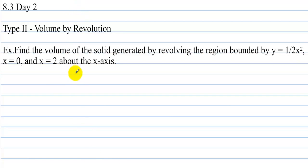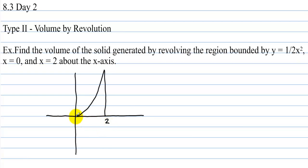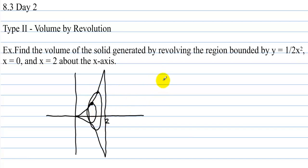Let's graph it: there's the y-axis, here's the x-axis, and we have this parabola. Let's say this is 2 right here. Now let's form the 180-degree turn when we revolve this around the x-axis. Take any arbitrary x and revolve it around the x-axis. The cross section is a circle, so we find the area of the circle: the integral from 0 to 2 of pi r squared with respect to x. The radius is the function value from the x-axis to the curve, so the radius is one half x squared.